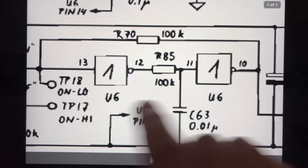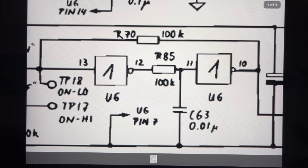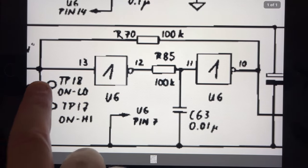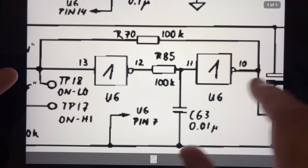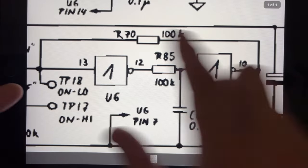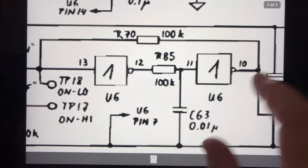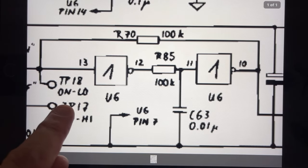So the latch will now enter its other stable state of low input, high, low, back into a low current feedback loop which is low at this end. And that's why TP18 says power on low.